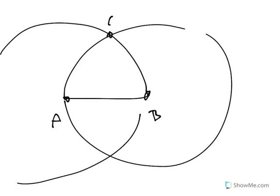This point C, when I connect these, forms an equilateral triangle because in circle A these are two radii, so they're equal. But in circle B, AB and BC are two radii, so they're equal, and therefore all three are equal.